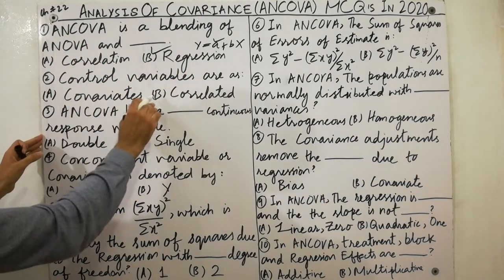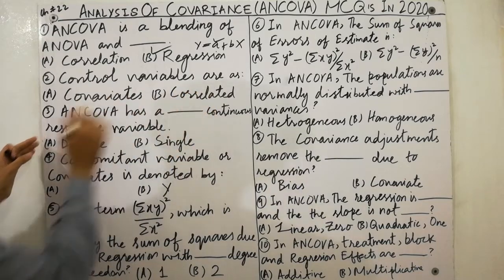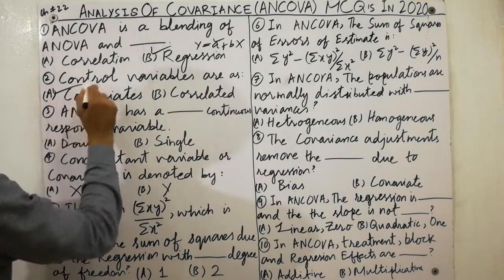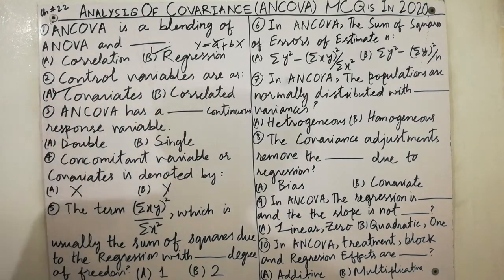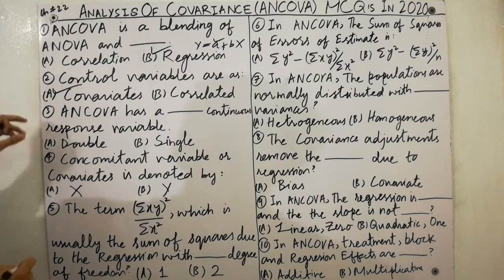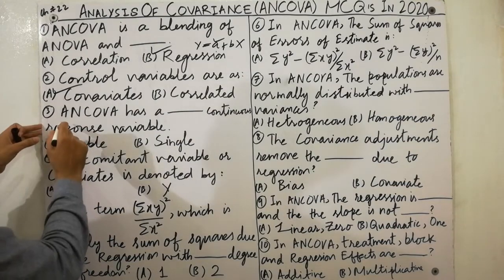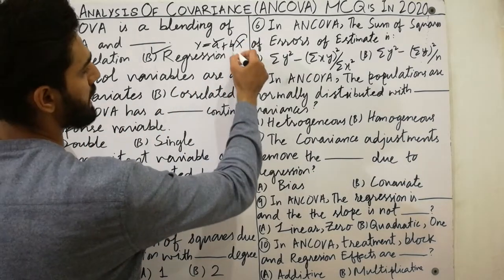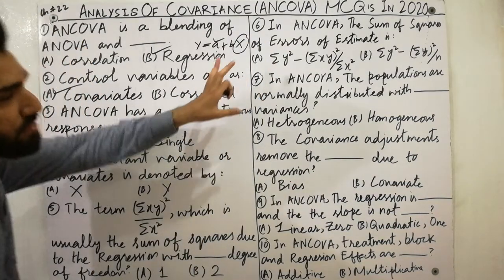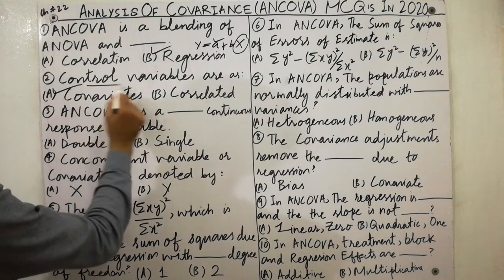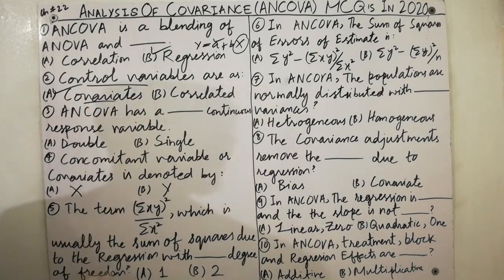Control variables are known as covariates — must remember that. The X variables are the control variables and covariates.